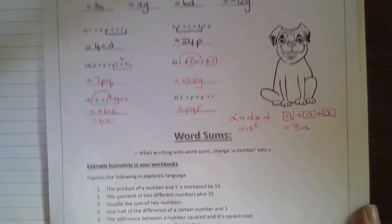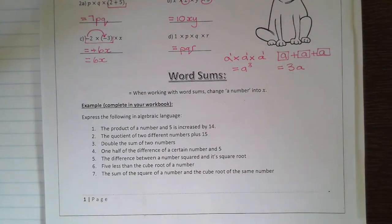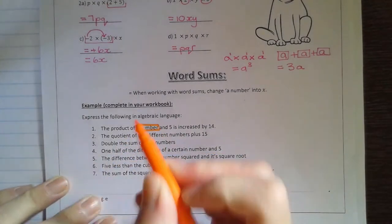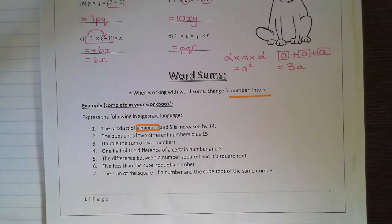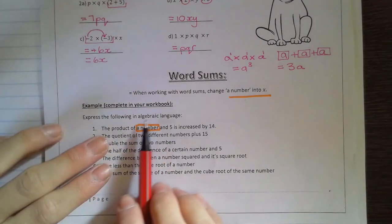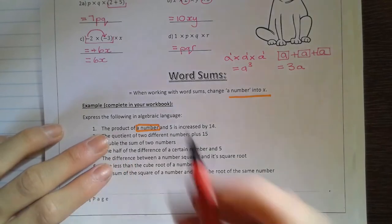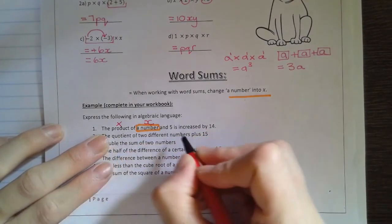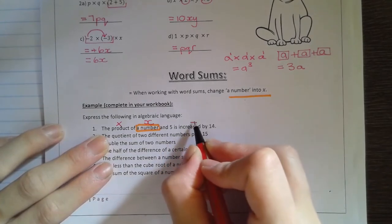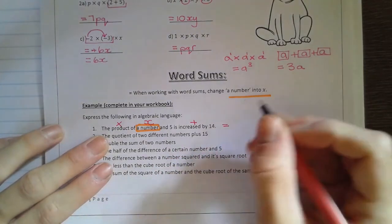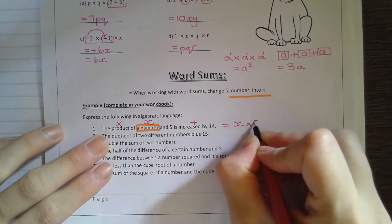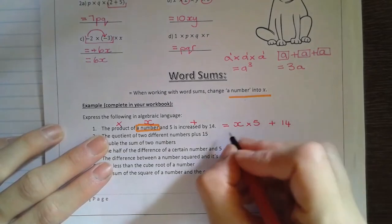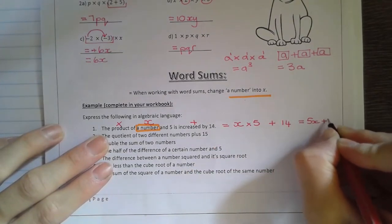Now moving on to the word sums. When working with word sums, change a number into an X. You can pick any letter, but X is our common letter. Let's see what we can work with. Express the following in algebraic language, in other words, in maths language. The product, product means times of a number, we're going to call it X and five. So five and X are being multiplied is increased by 14, so we're going to be adding 14. The product of a number, so X times five is increased by 14. We can rewrite that as 5X plus 14.